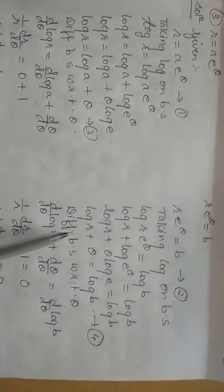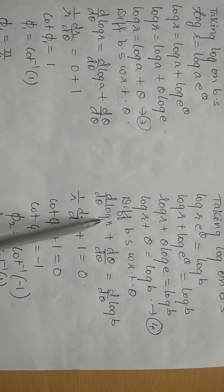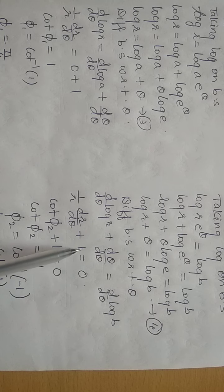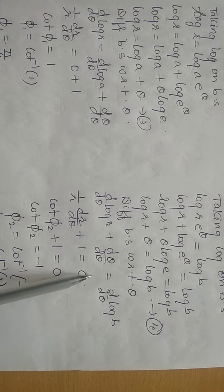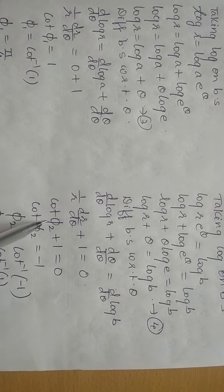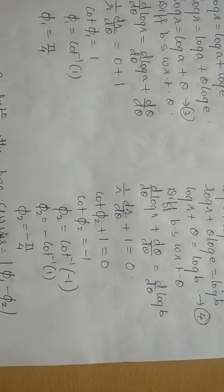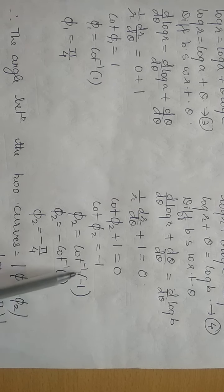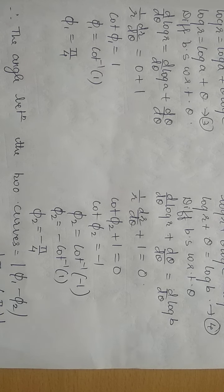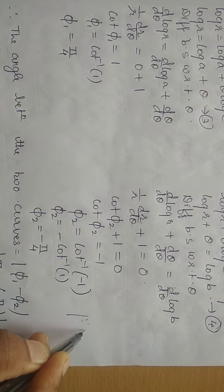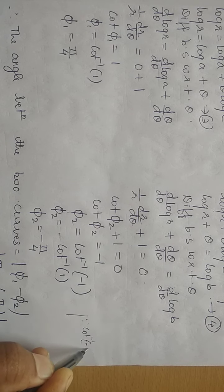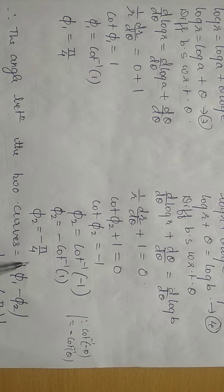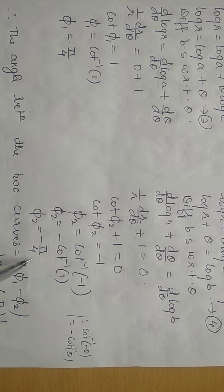Differentiating both sides with respect to θ: the derivative of log r is (1/r)·(dr/dθ), the derivative of θ is 1, and the derivative of log b is 0. So cot φ₂ + 1 = 0, giving cot φ₂ = -1, and φ₂ = cot⁻¹(-1). Since cot⁻¹(-θ) = -cot⁻¹(θ), we get φ₂ = -cot⁻¹(1) = -π/4.